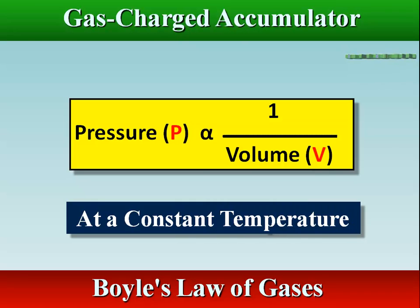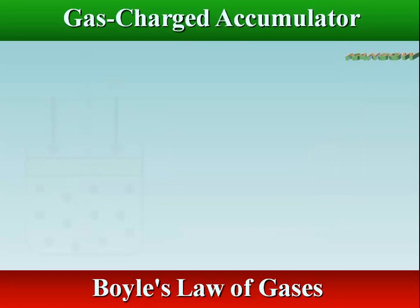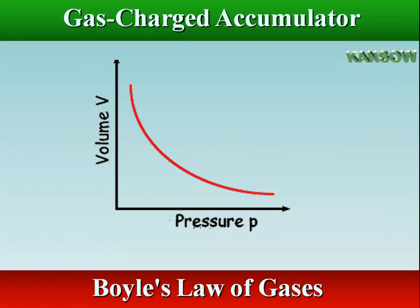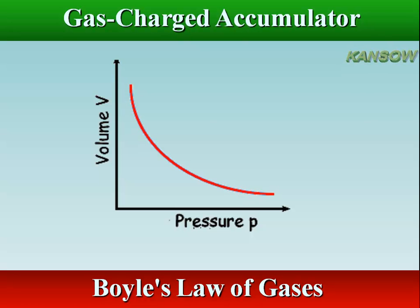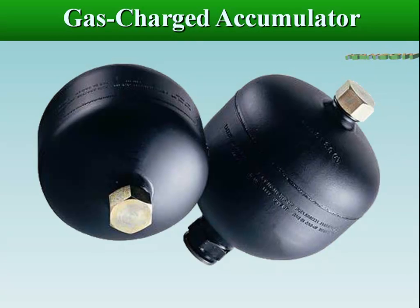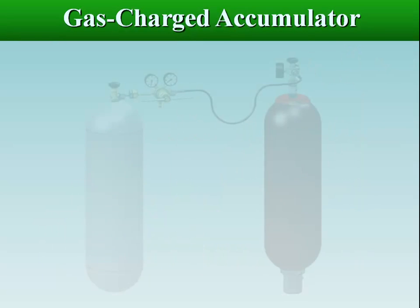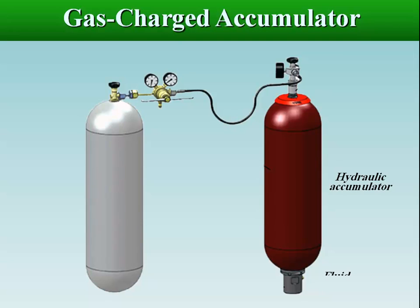The gas-loaded type hydraulic accumulator operates in accordance with Boyle's Law of Gases, according to which the pressure of a gas varies inversely with its volume for a constant temperature process. It is popularly known as a hydropneumatic accumulator. It applies force to the liquid by using a compressed gas that acts as the spring. It uses inert gas, nitrogen, under pressure that provides the compressive force on fluid.